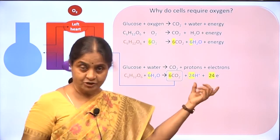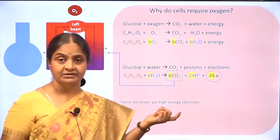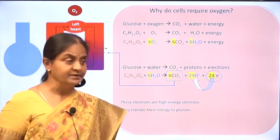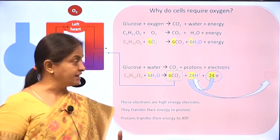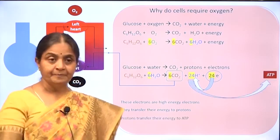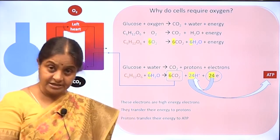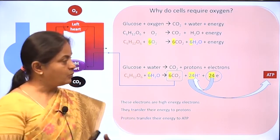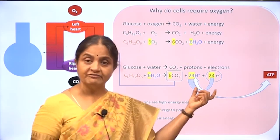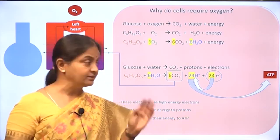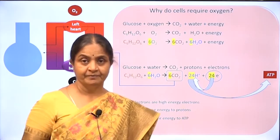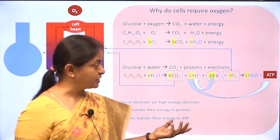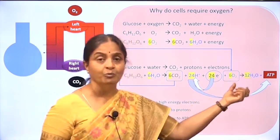The protons and electrons produced are high energy electrons. They transfer their energy to protons, a proton gradient is built up, and that proton gradient is important for generation of energy — the energy currency within the cell, which is the high energy phosphate bond in the ATP molecule. These protons and electrons then have to be removed from the system so that the reaction can proceed, and that is where oxygen comes in. Oxygen combines with the protons and electrons to form water.